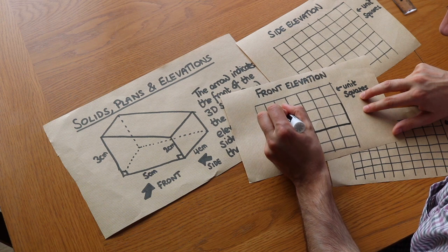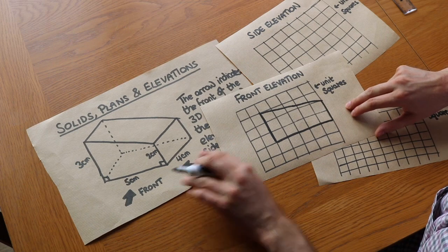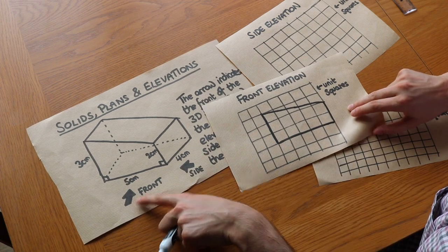And then let's just join up the top so that's like that. We would usually use a ruler and there we go, that's the front elevation, that's what you would see from the front of the shape.